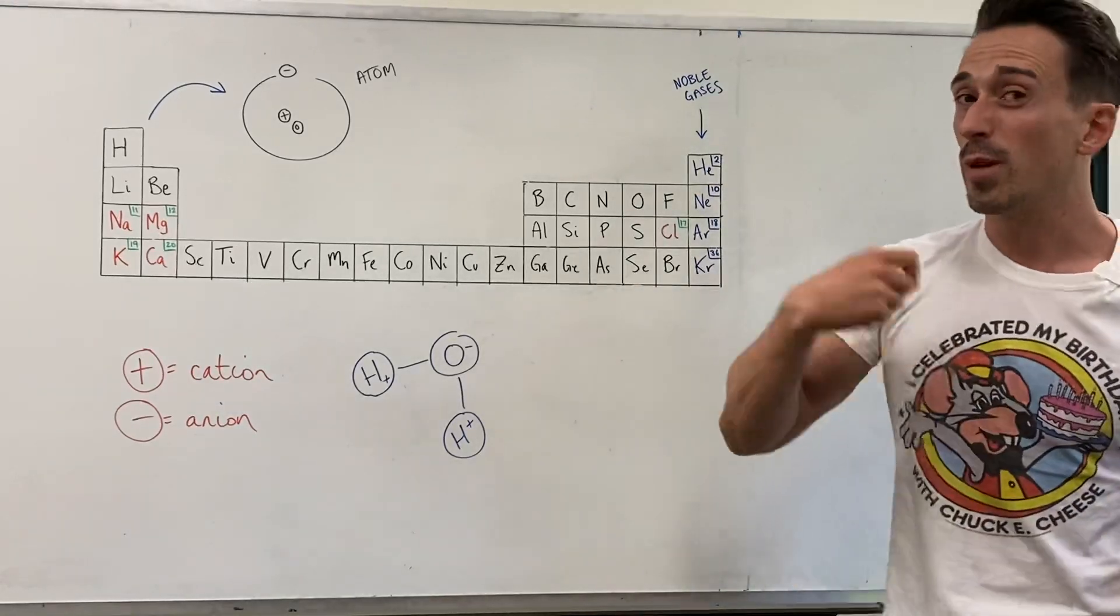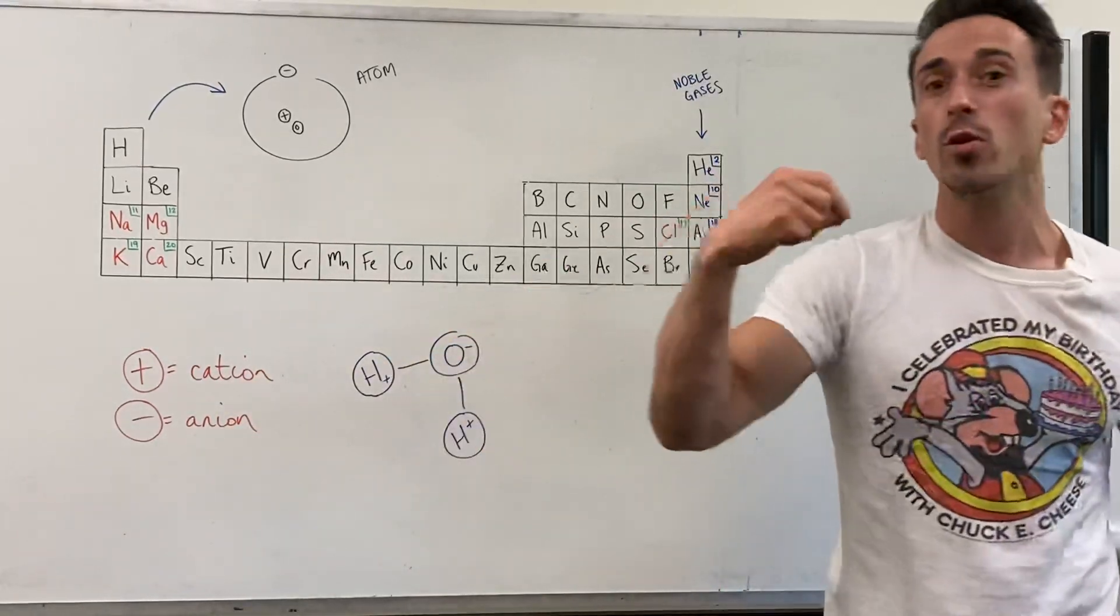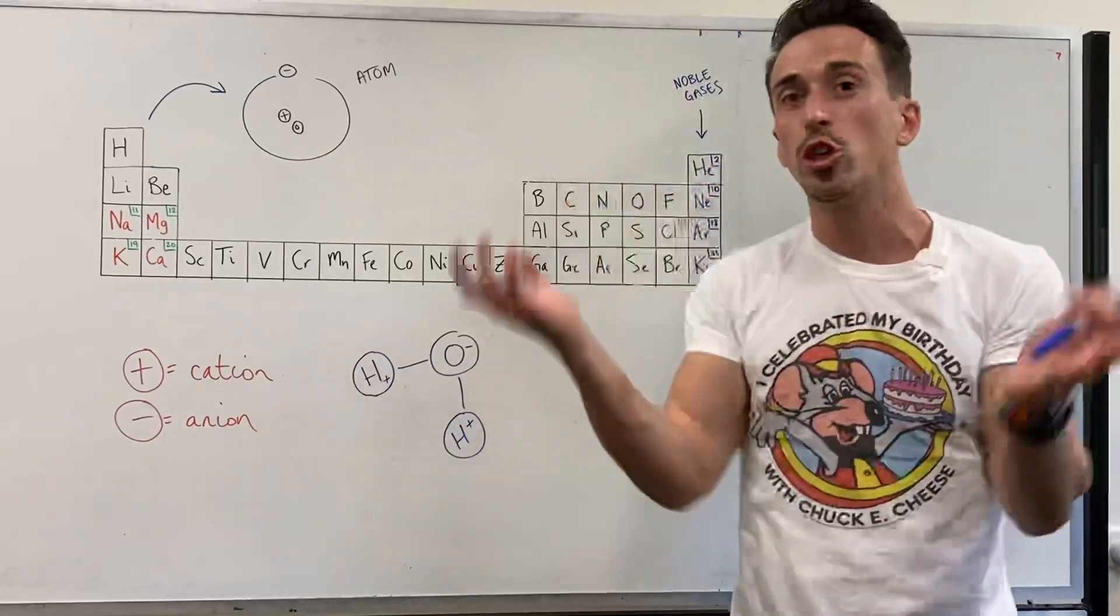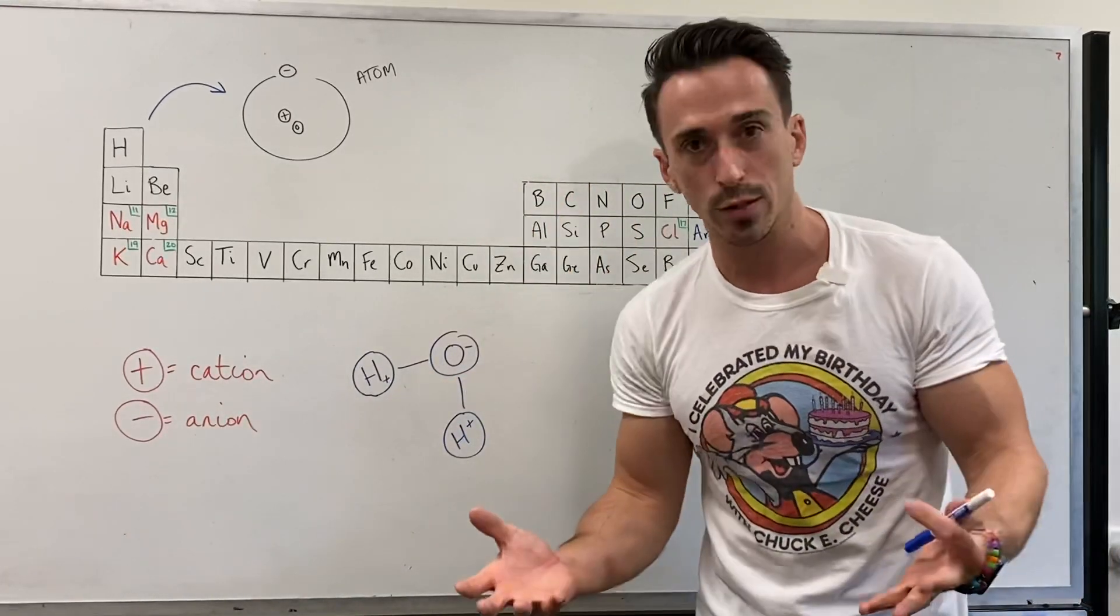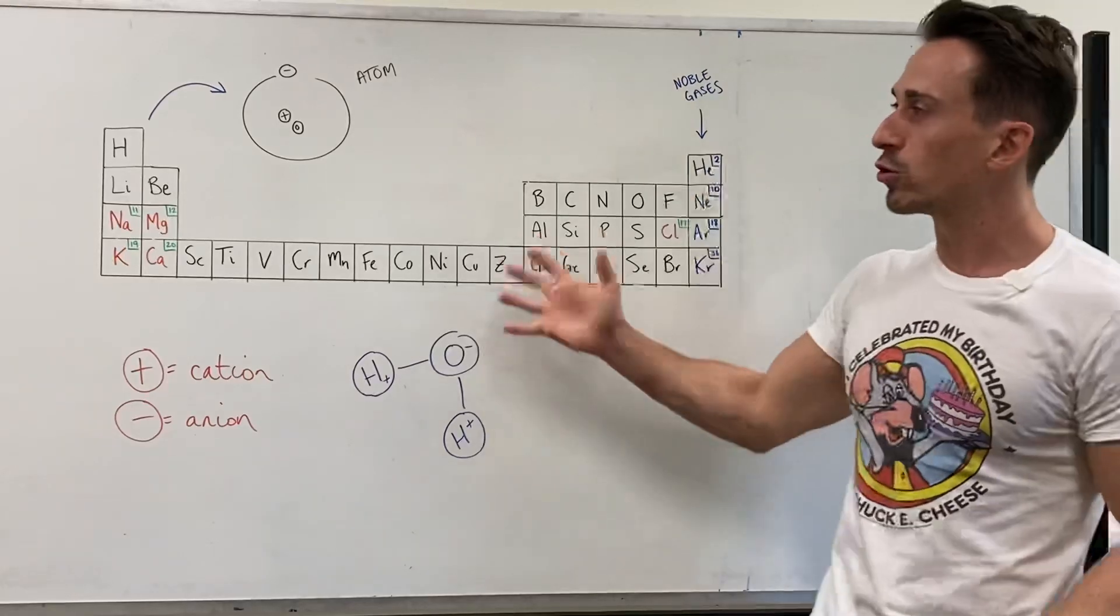In the body it can either be positively charged, which we call a cation, or negatively charged, which we call an anion. Cumulatively we just call them ions. The thing is, how do we get it from this neutral form to a charged form?